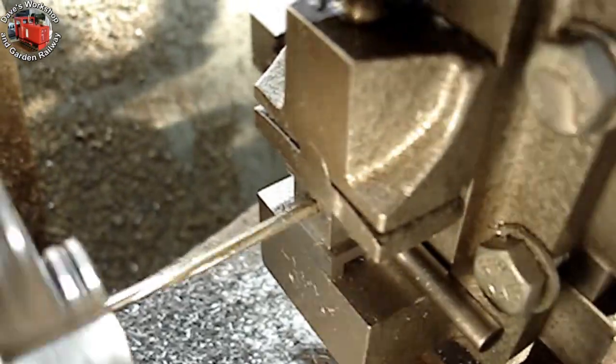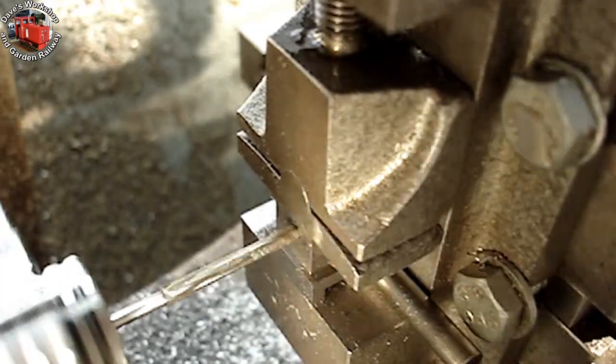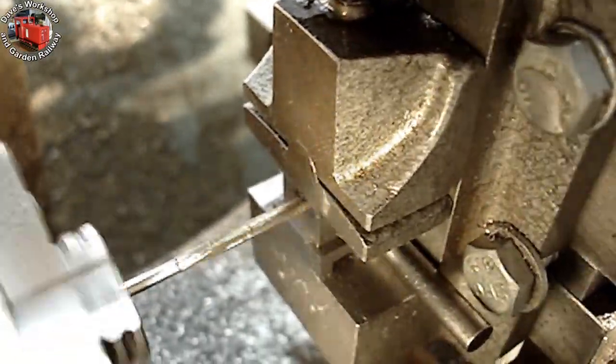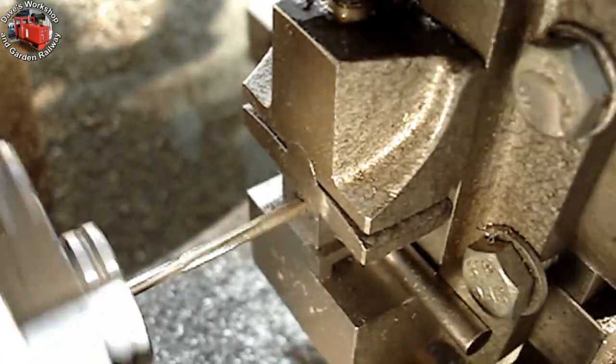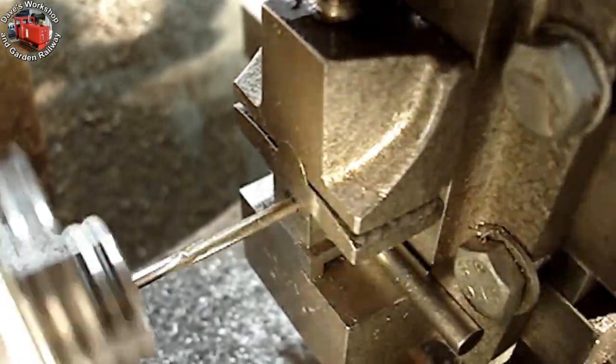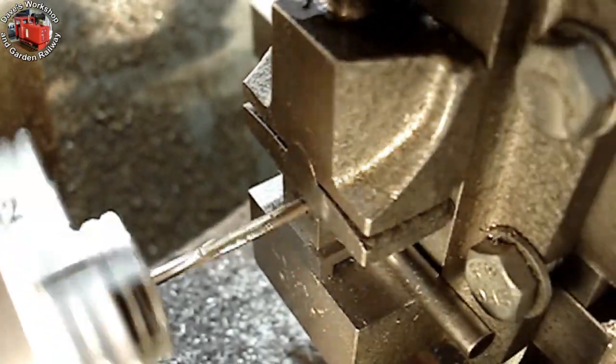Here I am reaming the pivot hole 1 eighth inch at 200 rpm with a hand reamer. It needs feeding in a long way to get to the parallel portion. I had previously drilled the hole 3.1 mm diameter to leave a minimal amount for reaming. It's still a long hole though at 0.4 inch.